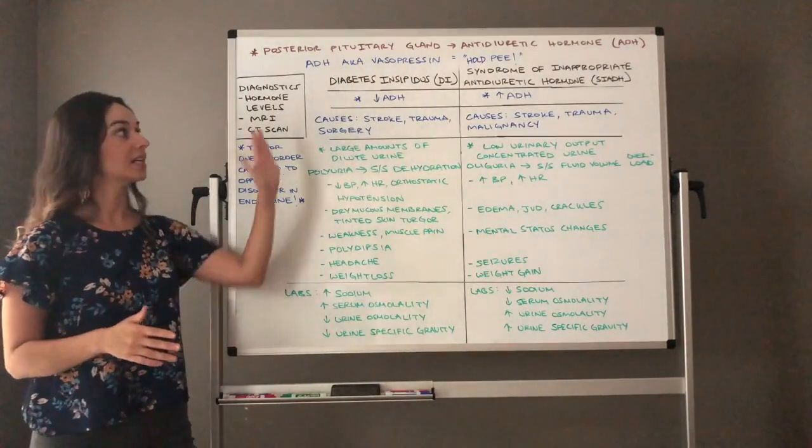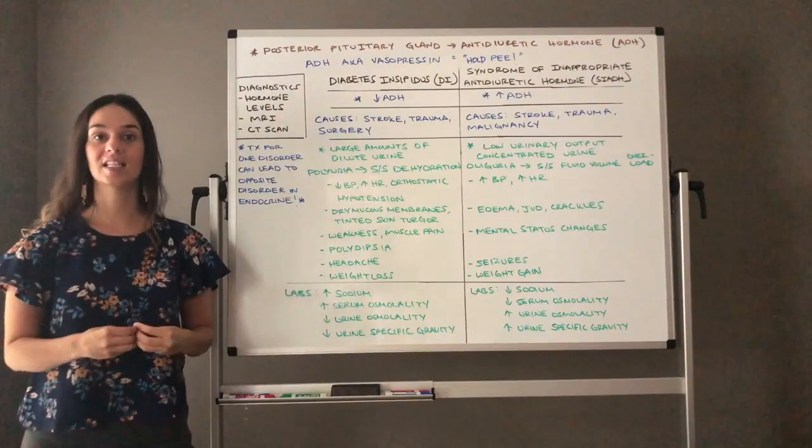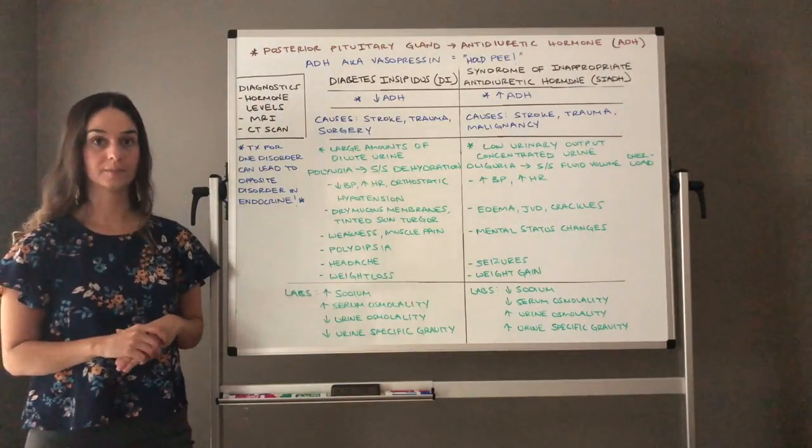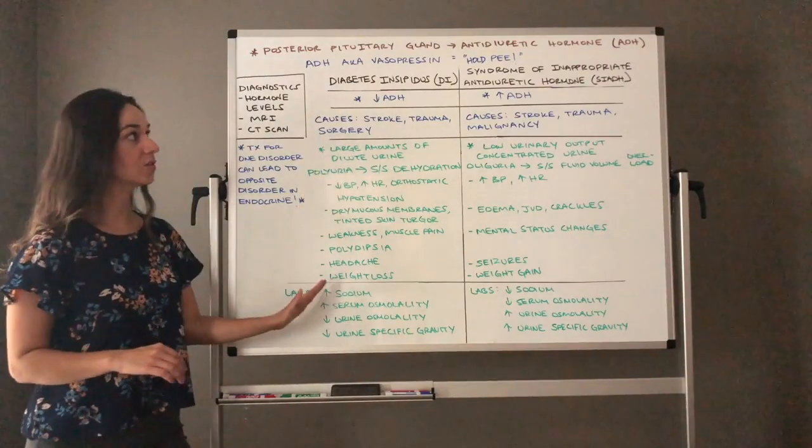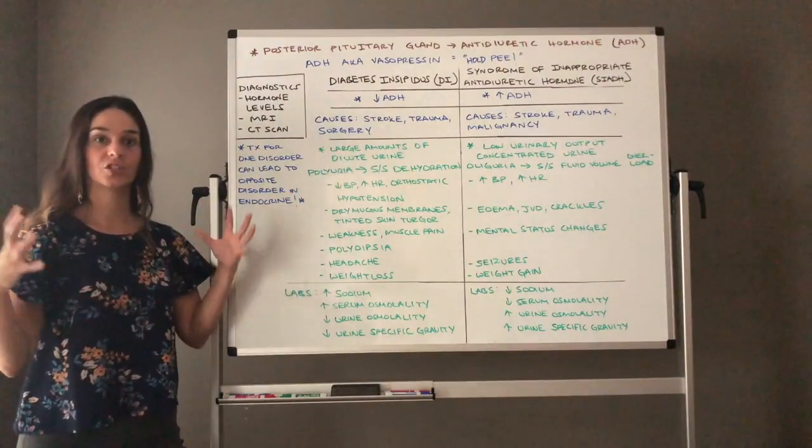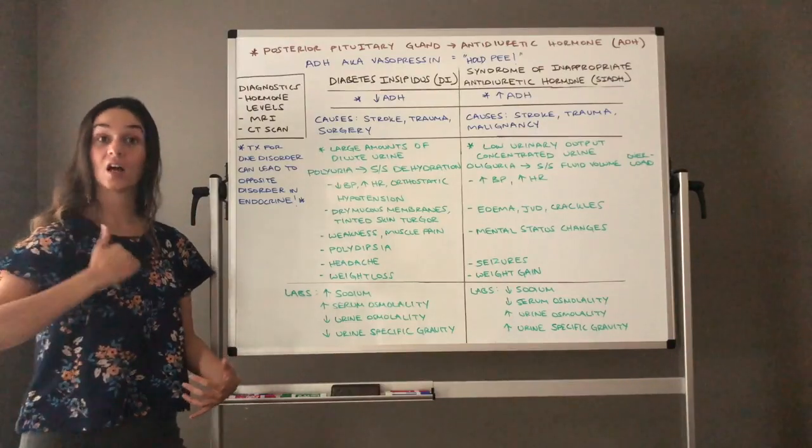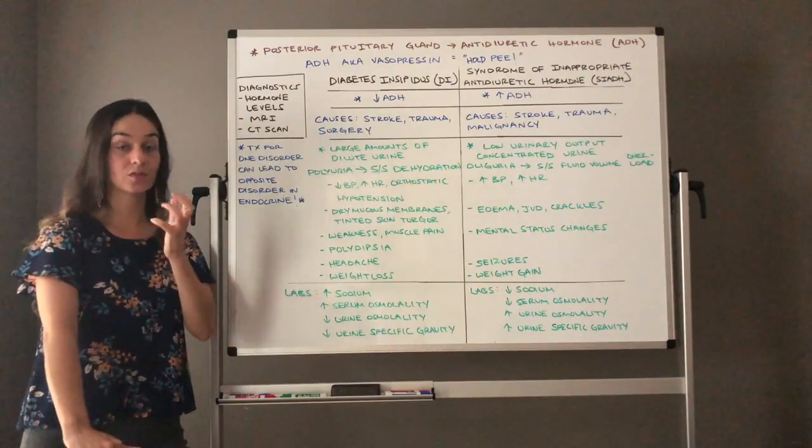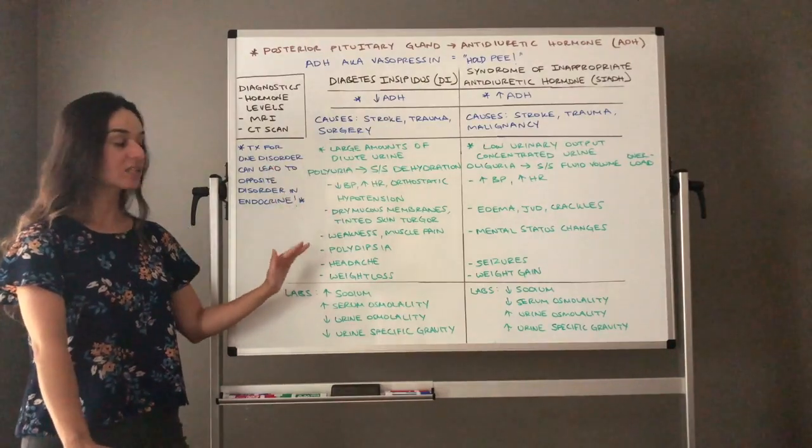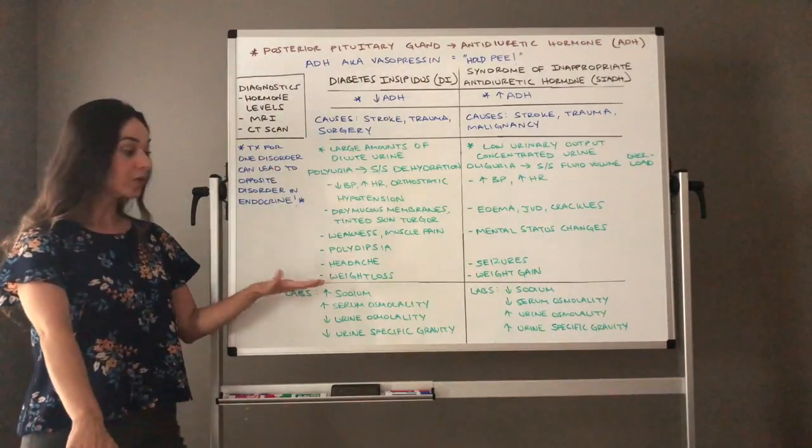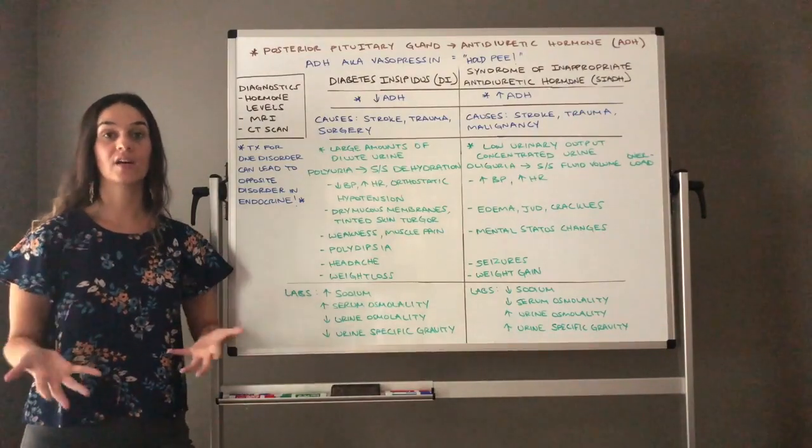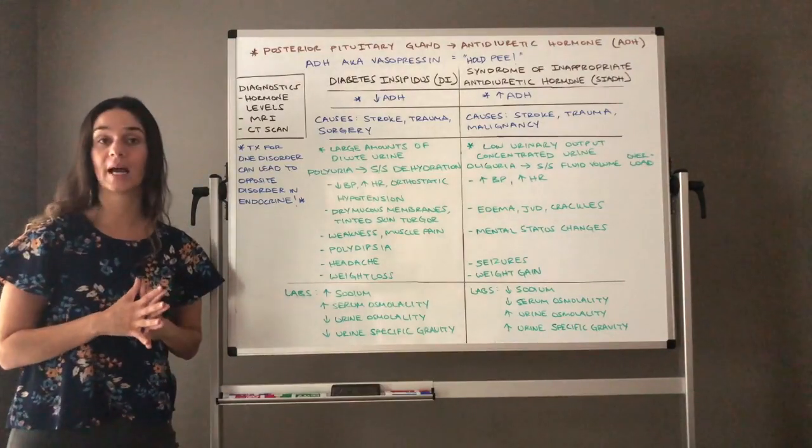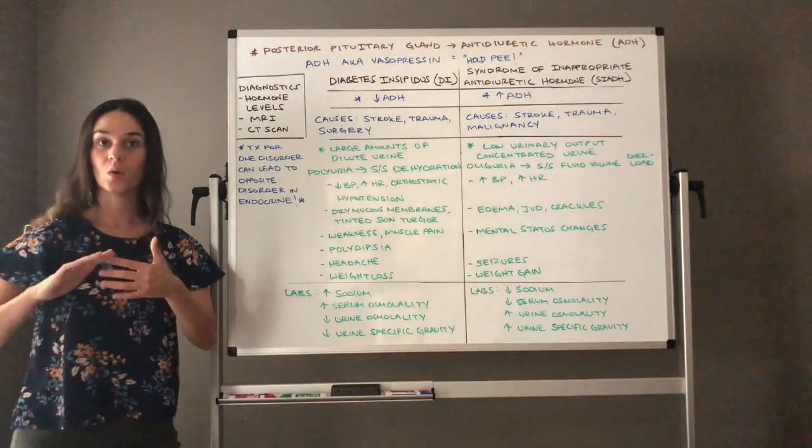So let's think about our labs. Again DI you're going to think about signs and symptoms of dehydrated client. SIADH you're going to think about signs and symptoms of a fluid volume overload client. Let's think about our labs going back to diabetes insipidus. With low ADH you're thinking about a dehydrated client. They lost all their water. Remember ADH only controls water. We're not talking about aldosterone which controls sodium and water. ADH only controls water. So this client has peed off all their water. Their sodium levels are going to be very high and very concentrated in their blood. They're going to have hypernatremia.